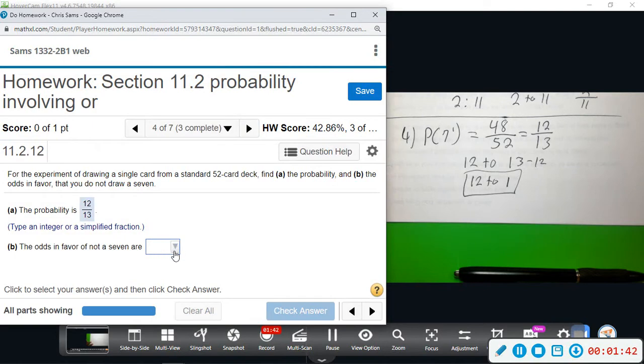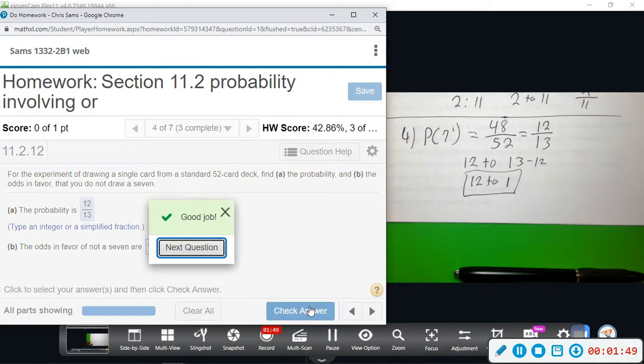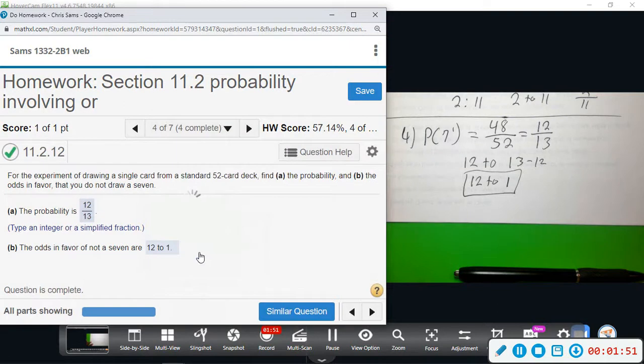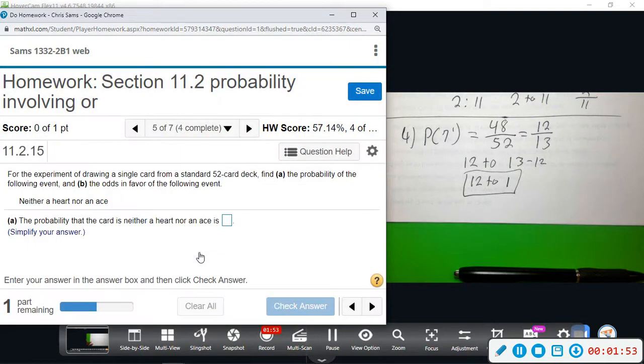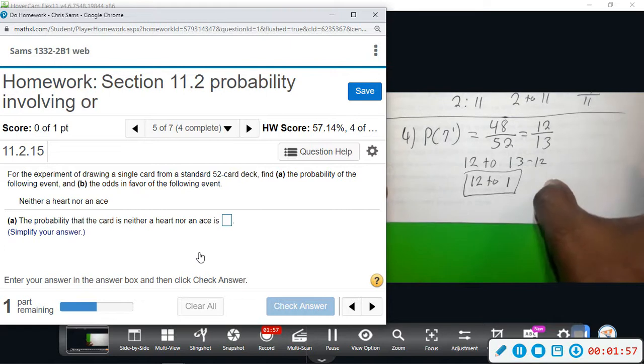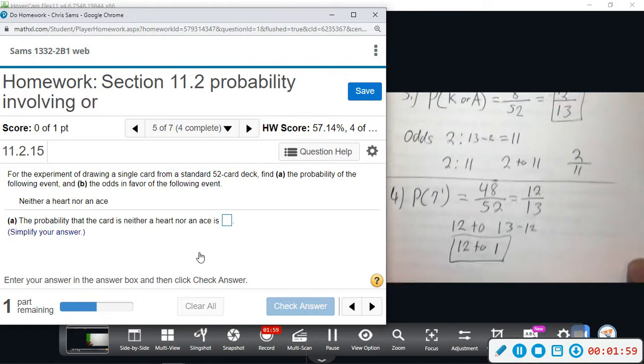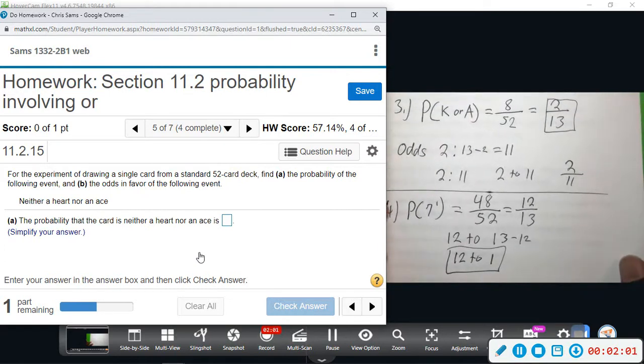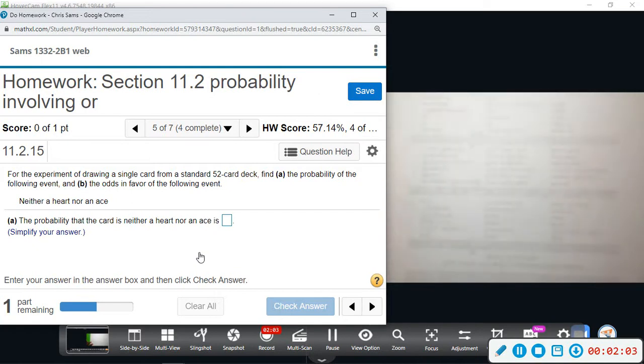So that's our probability and odds: probability is 12 out of 13, and the odds in favor of not a seven will be 12 to 1. All right, number five: for the experiment of drawing a single card, we want to find the probability and the odds in favor of neither a heart or ace. So we don't want a heart, we don't want an ace.